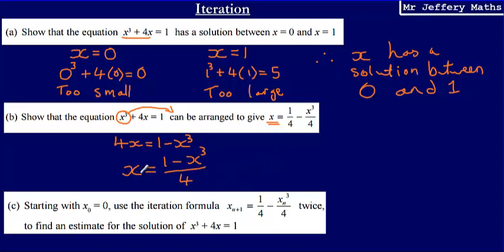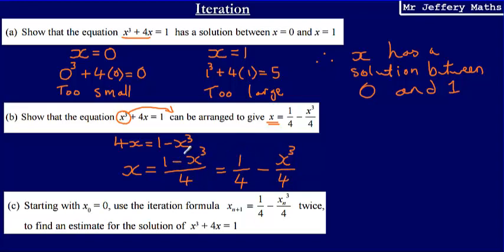You might notice it asks us to write it as one quarter minus x cubed over 4, but this is simply the same thing. If two fractions share the same denominator we can write the sum of their numerators on top. So 1 minus x cubed over 4 is exactly the same as one quarter minus x cubed over 4.